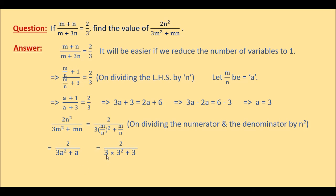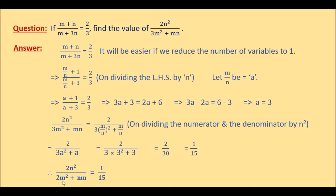We know the value of a is equal to 3, so we put that in: it becomes 2 over 3 times 3 squared plus 3. Now 3 squared is 9, times 3 is 27, plus 3 is 30. So it is 2 over 30, and dividing numerator and denominator by 2 we get 1 over 15. Therefore, 2n squared divided by 3m squared plus mn equals 1 over 15. This is our answer.